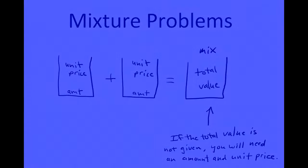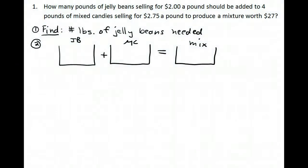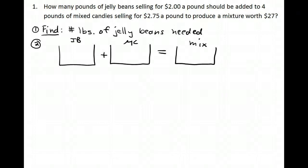Here's our first problem: how many pounds of jelly beans selling for $2 a pound should be added to 4 pounds of mixed candy selling for $2.75 a pound to produce a mixture worth $27? What I'm trying to find is the number of pounds of jelly beans needed. I set up my buckets — one for jelly beans, one for mixed candy — and add them together to get the mix. In the top of each bucket goes the unit price.